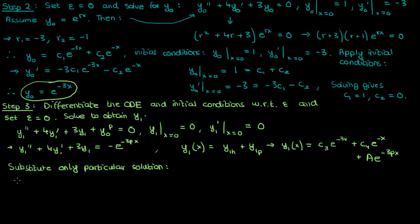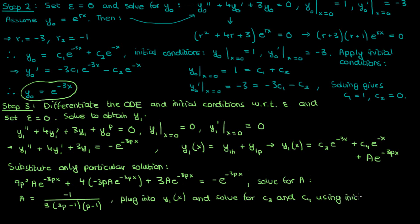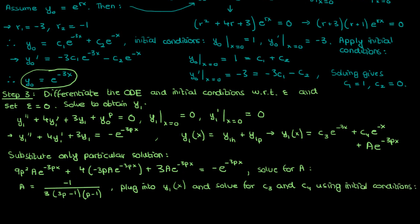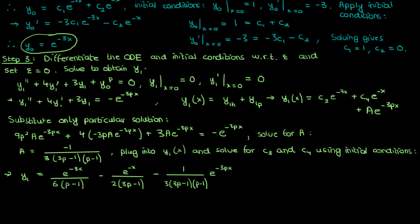So let's substitute just the particular solution into our ODE for y1. The second derivative will be 9p squared times a times the exponential. The first derivative will be negative 3p times a times the exponential, and we already know what the particular solution itself is. When we solve this for a, here's what we get. And if we now plug in this a into y1 and solve for c3 and c4 using our two initial conditions, you can show yourself that here's what we end up with. I didn't do the full calculation because it would take too long and wouldn't add anything to your knowledge about perturbation theory. I already demonstrated how to use the initial conditions to find the unknown integration constants, so I trust that you can repeat that same technique here.